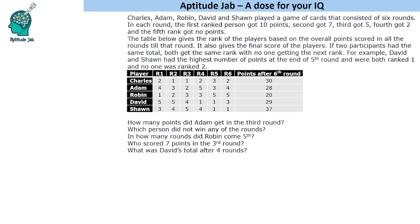There are 5 players who played a game of cards with 6 rounds. In each round, the first person got 10 points, the second person got 7 points, the third person got 5, then 2, and the last person did not get any points. The table gives the rank of the players based on the overall points scored in all rounds till that round — this is called a cumulative rank.